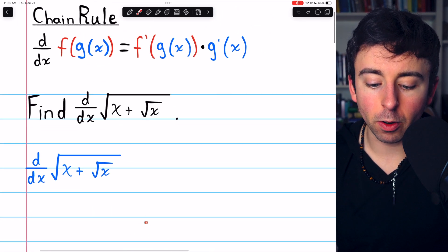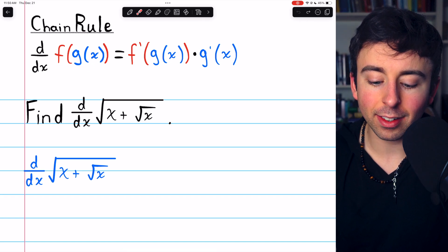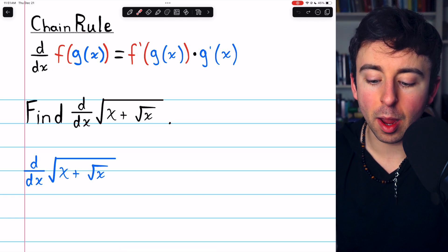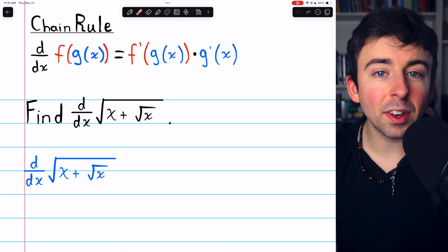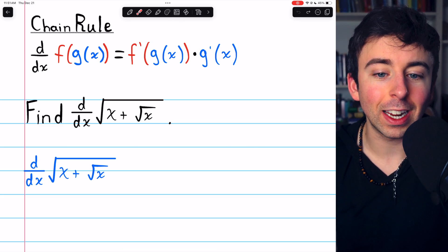The chain rule is, hopefully you remember, the derivative of f of g of x is f prime of g of x times g prime of x. So you have to think about what the outside function and the inside function is.